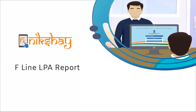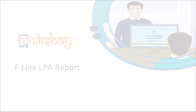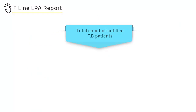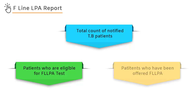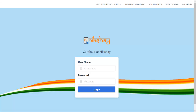This video will help you in understanding how to access F-Line LPA report in the Mixshare portal. It gives a total count of notified TB patients and patients who are eligible for F-L-LPA test and have been offered F-L-LPA based on date range, i.e., date of diagnosis selected by the user.